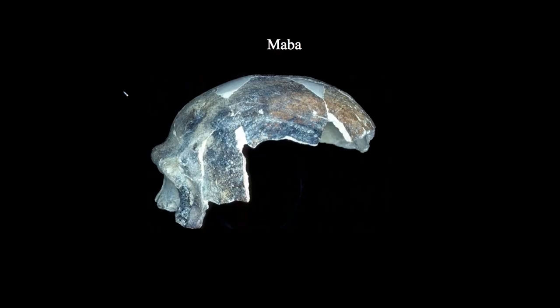Moving slightly further south in China, we have the specimen Maba, coming from the southeast China coast. Again, we have a slightly different variant of the morphology, but many of the same features, and again a convergence towards an overall more modern appearance. Maba has the most pronounced forehead of these early Chinese remains, indicative of an expansion of the endocranial volume, particularly anteriorly. It has a somewhat prominent superorbital torus, though not nearly as large as Dali's, and zygomatics that come out laterally but maintain an overall anterior position relative to the skull.